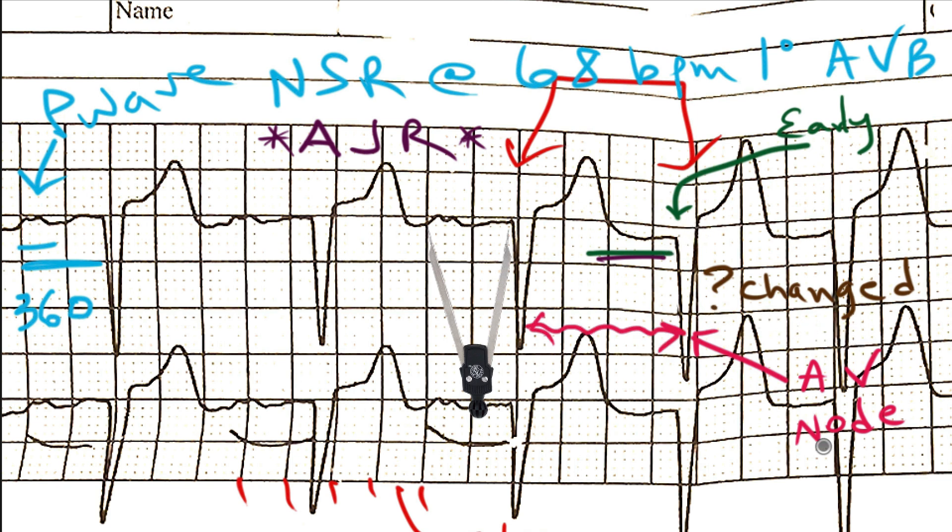It's possible that the AV node just started firing at that moment. But when you have an accelerated junctional rhythm, what's happening to the sinus node? The sinus node doesn't really know what the AV node is doing, and sometimes you can have an accelerated junctional rhythm as an escape rhythm. If the sinus node slows down suddenly, then the AV node sort of takes over.